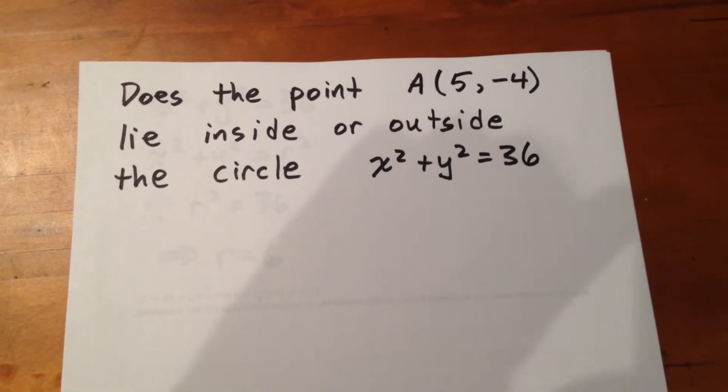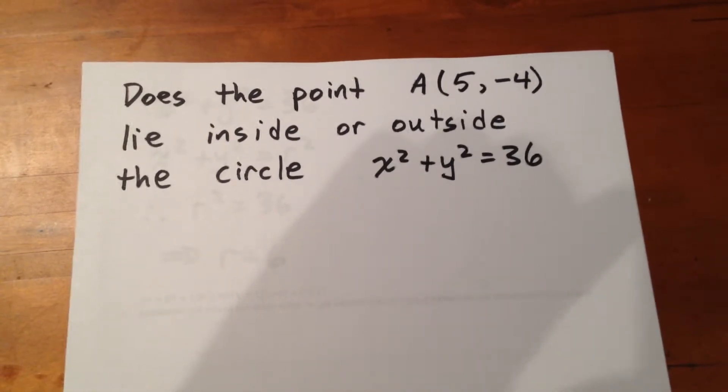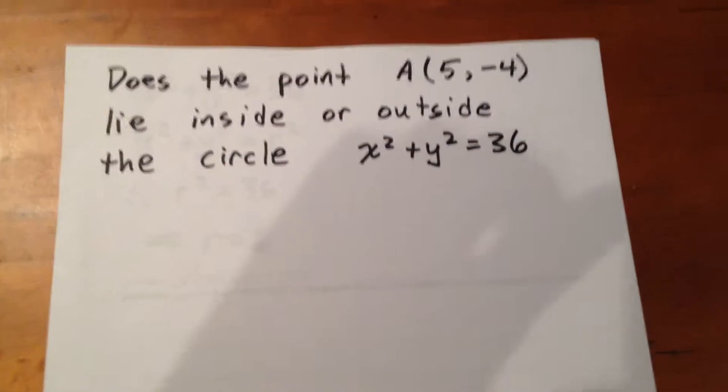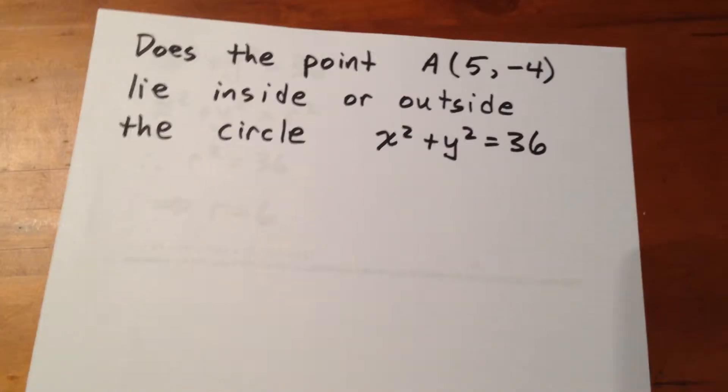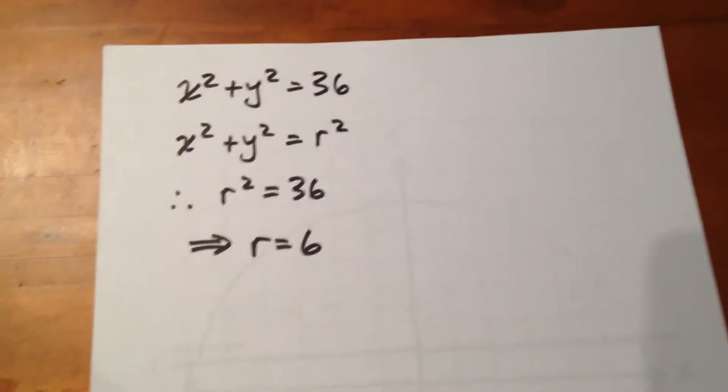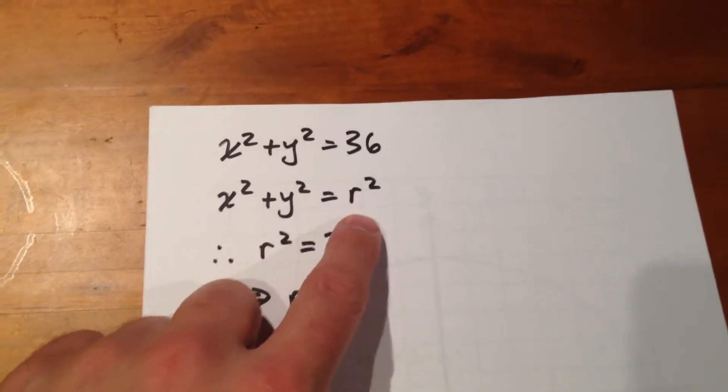Hopefully we recognize x squared plus y squared equals 36 as a circle centered at the origin, because circles centered at the origin are of the form x squared plus y squared equals r squared.